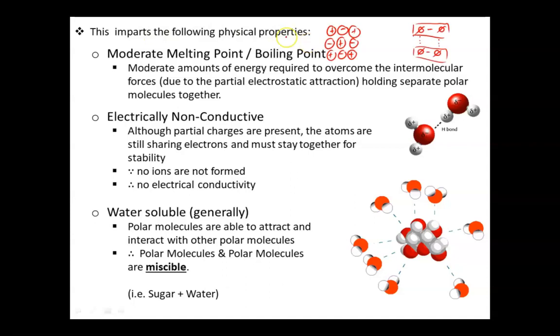Due to these partial charges, we're going to have the following physical properties. In terms of melting point and boiling point, it won't be as high as an ionic compound, because they have definitely positive and definitely negative charges that hold them together tightly, and it won't be as low as non-polar covalent compounds because they're neutral and neutral, so it's very easy to disrupt the intermolecular force. But the partial positive and partial negative will allow it to have something in the middle, a moderate melting point and boiling point. Again, since there are no ions formed, we will have no electrical conductivity in general.